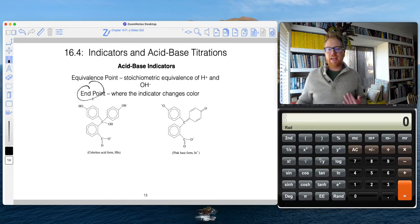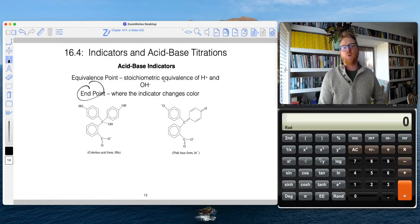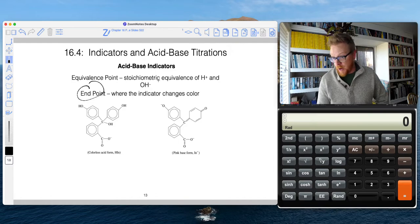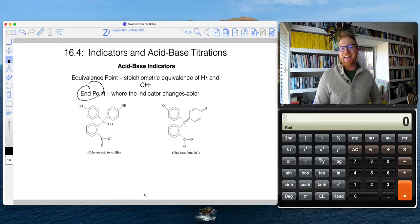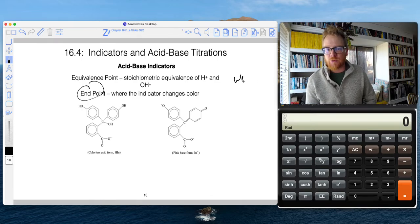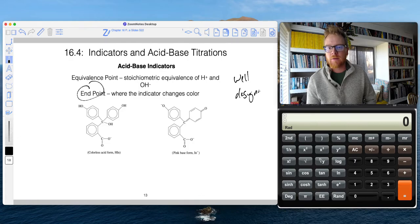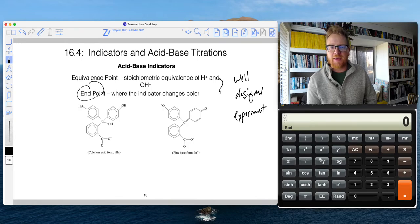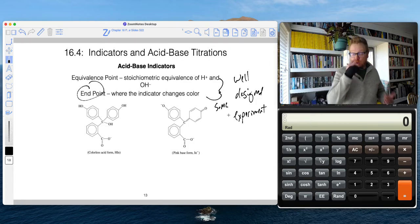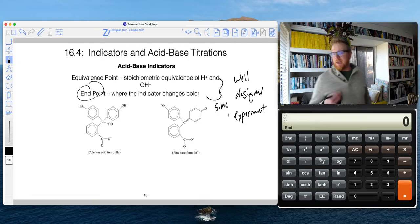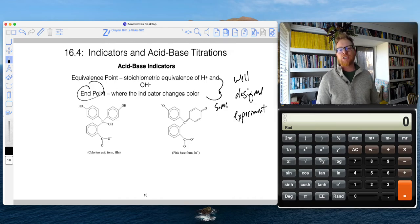So the equivalence point and the end point are different. Remember, the equivalence point is where there's stoichiometric amounts of H plus and OH minus. The end point is where the indicator changes color. And in a well-designed experiment, these are the same. So if you knew what your equivalence point was going to be, suppose you expected it to be 7.0, you would want to pick an indicator that undergoes a color change in that vicinity of 7.0.